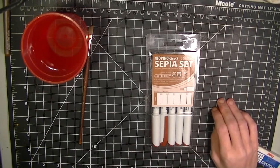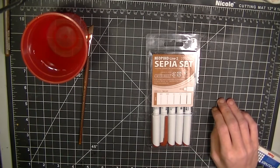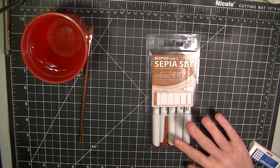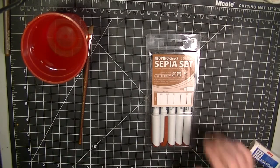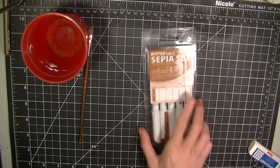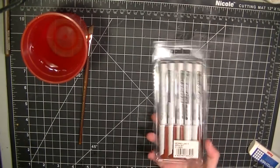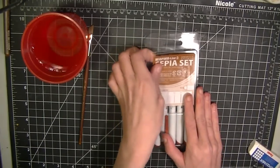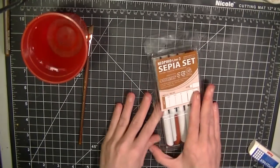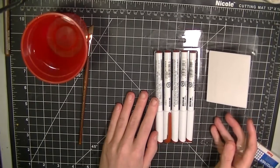So this pack, unlike a Copic multi-liner pack, comes with five multi-liners and not four, and these multi-liners are from a .03 to a .05. The packaging, as you guys can see, is really nice, very nifty, and one thing I do like about this packaging is that it does open quite nicely.